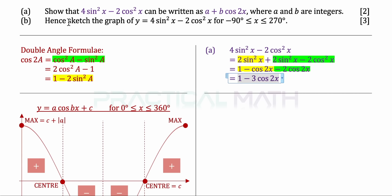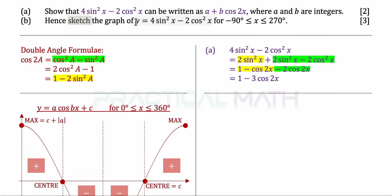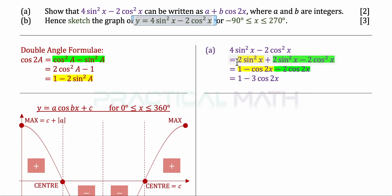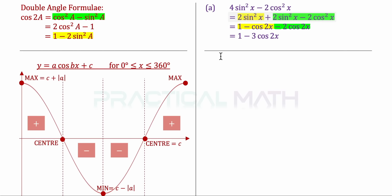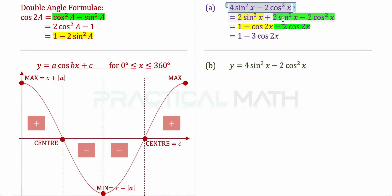That completes part A. In part B, we need to sketch the graph of y equals 4sin²x minus 2cos²x, which is essentially y equals 1 minus 3cos2x from part A. Take note that the range goes into negative x values, so that matters for the sketch.